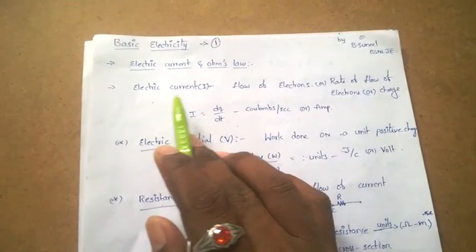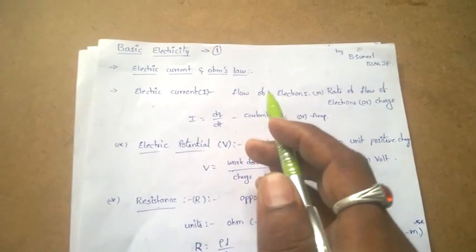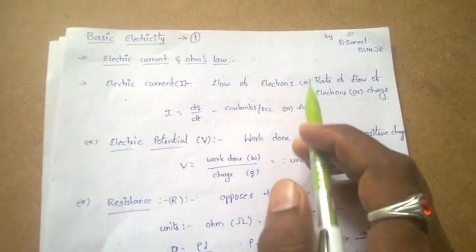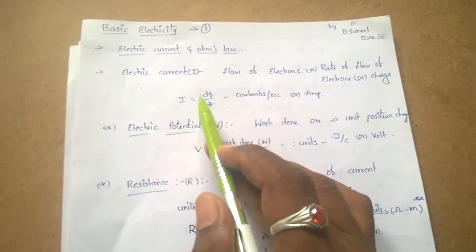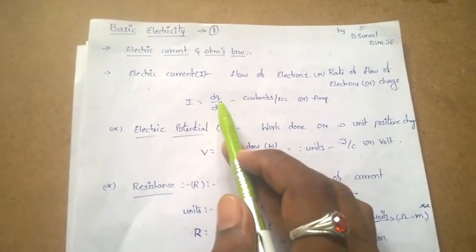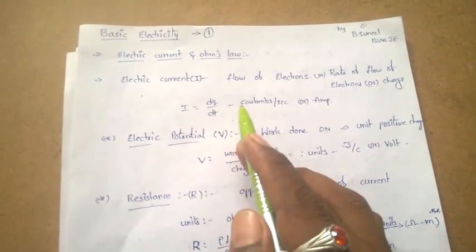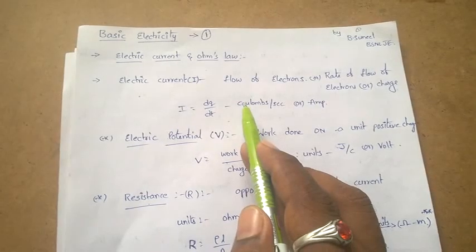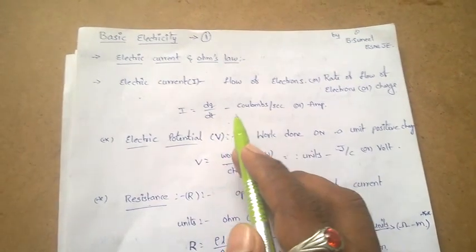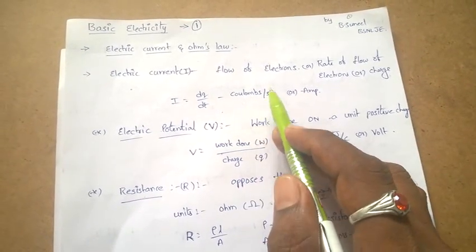What is electric current? Electric current is nothing but flow of electrons — rate of flow of electrons or charge. The electric current is denoted by I. I equal to dQ by dt. The units are very important. For charge Q, units are coulombs; for time, units are seconds. So coulombs per second are nothing but amps. The units of electric current is coulombs per second, or amps.